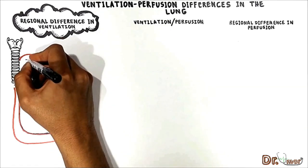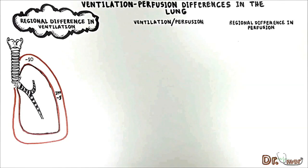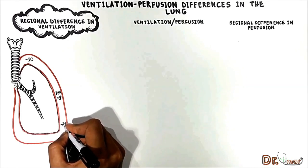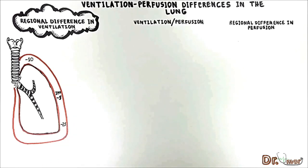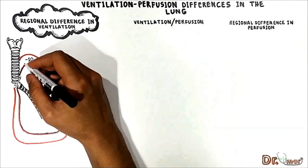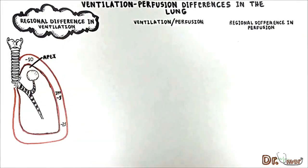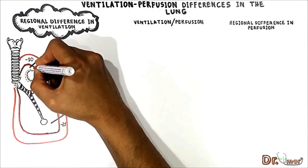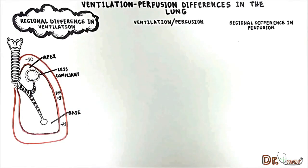The intrapleural pressure at the lung apex is negative 10 cm water in an upright person at FRC, and at the basal region it is negative 2.5 cm water. The more negative the intrapleural pressure, the larger the alveoli. Thus the alveolus in the apex is larger than in the basal region. This tells us that the alveolus in the apex is stiff and less compliant because it is already stretched open, making it difficult to further stretch. During inspiration it opens less, so less air flows into the apical alveoli.